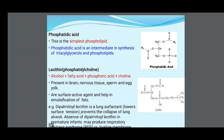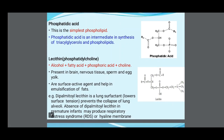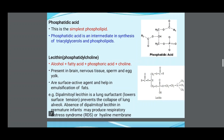Lecithin (phosphatidylcholine) contains alcohol, fatty acids, phosphatidic acid, and choline. It is present in brain, nerve tissue, sperm, and egg yolk. It acts as a surface-active agent and helps in emulsification of fat. Dipalmitoyl lecithin is a lung surfactant that lowers surface tension and prevents the collapse of lung alveoli. Absence of dipalmitoyl lecithin in a premature infant may produce respiratory distress syndrome or hyaline membrane disease.